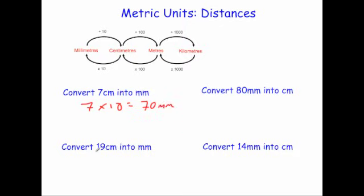Next, convert 19 centimetres into millimetres. Again, to go from centimetres to millimetres you multiply by 10, so 19 times 10 is equal to 190 millimetres. To convert any centimetres measurement into millimetres, you multiply by 10.